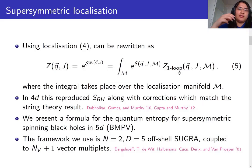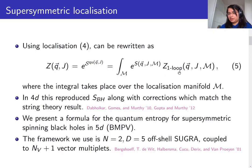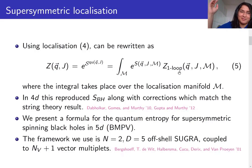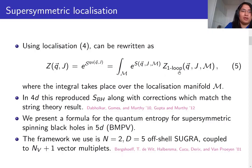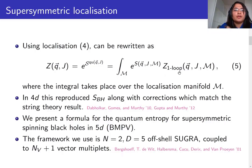Our integral now consists of three steps: figure out what the localization manifold is, evaluate the action on the localization manifold, and figure out what the one-loop determinant is. This action is the renormalized action of off-shell supergravity for our theory. In four dimensions quite a bit of work was already done by de Boer, Gomes, Murthy, and later Gupta, Murthy, and many others. They found the localization manifold, calculated the one-loop determinant, evaluated the action, and wrote down the quantum entropy — which matches the string theory results, reproducing the Bekenstein-Hawking entropy and extending it to give the exact same corrections.